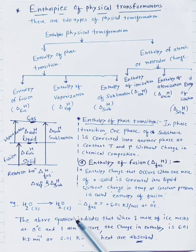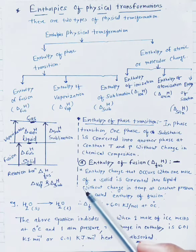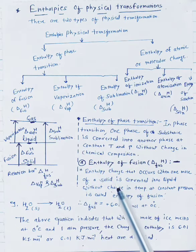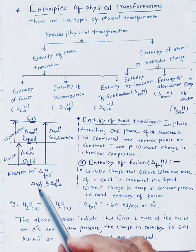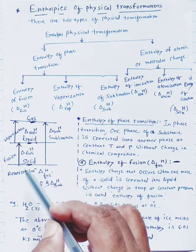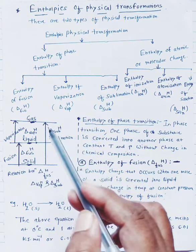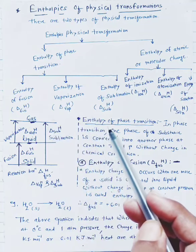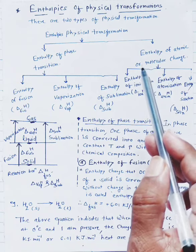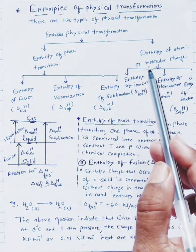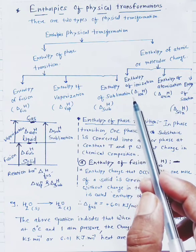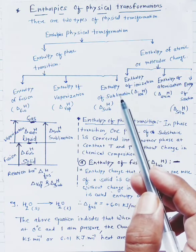If we have any substance, it has three states: solid, liquid, and gas. So these are the states of a substance. There are two types of physical transformation. In physical transformation, one state is converted into another state. These are the physical transformations.